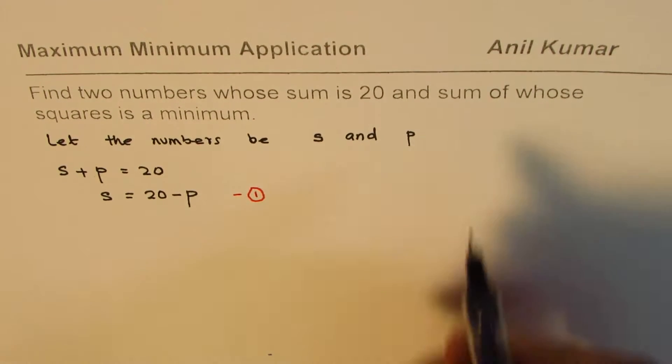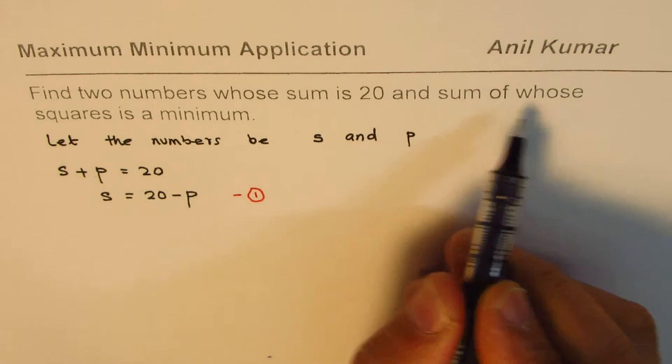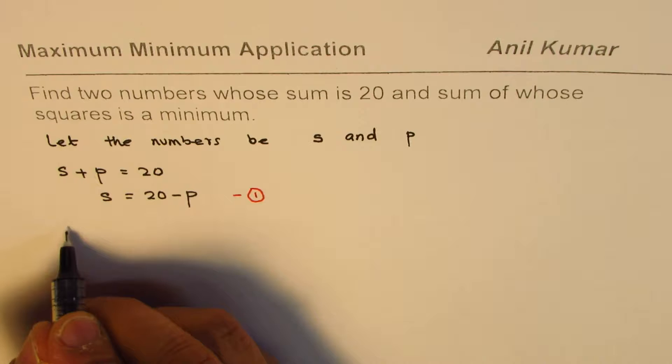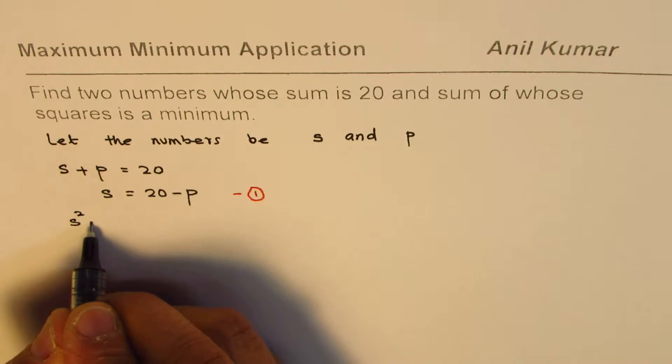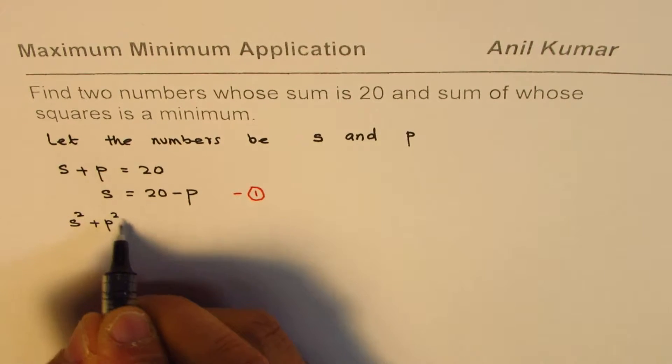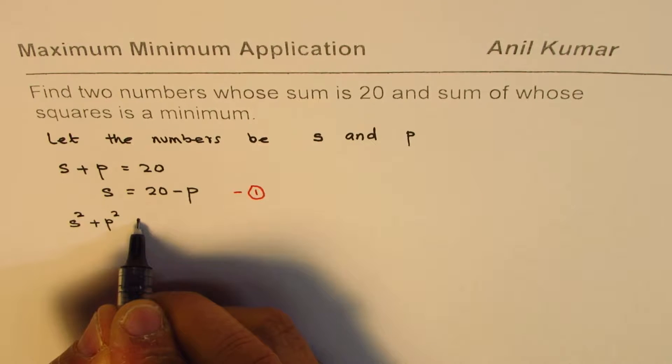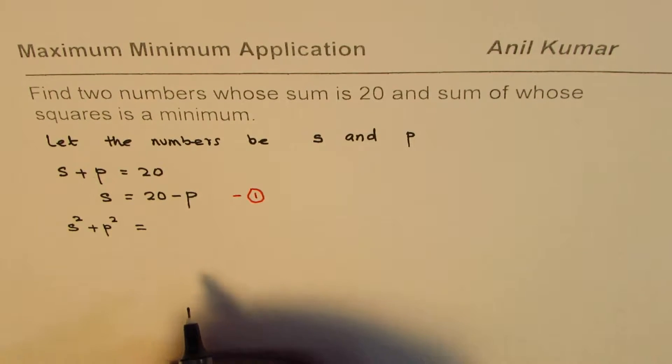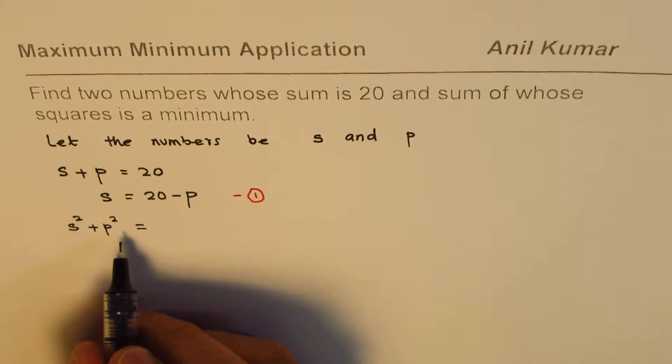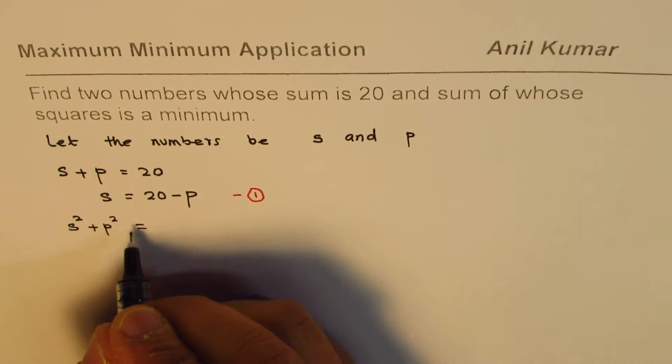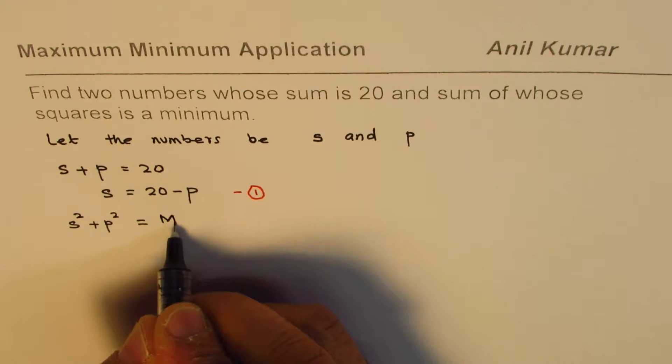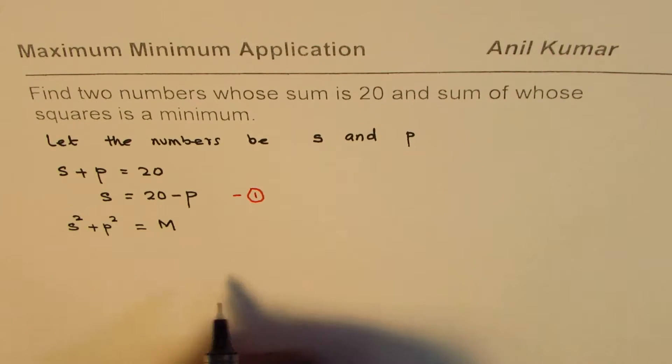Now the second condition given to us is sum of whose squares is a minimum. So let's find sum of their squares: s² + p². That should be minimum. This sum of squares is minimum, so this is what we want as minimum.